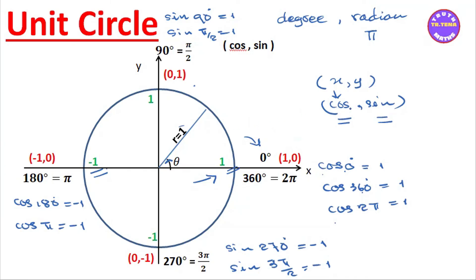x and y will be the cos and sin. x and y will be x and sin. y should be sin. Then there will be sin.